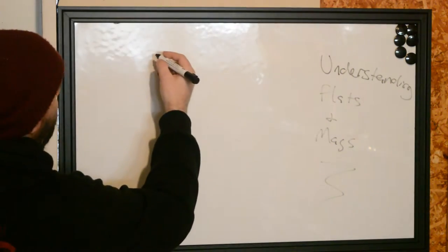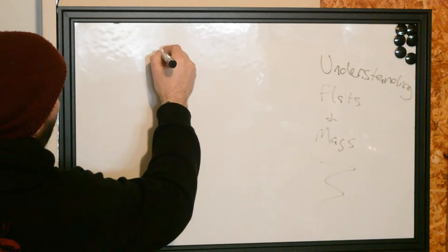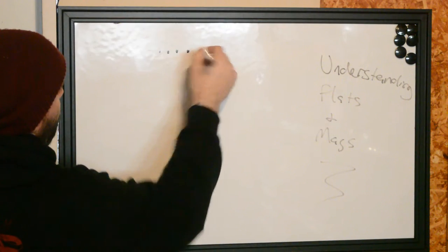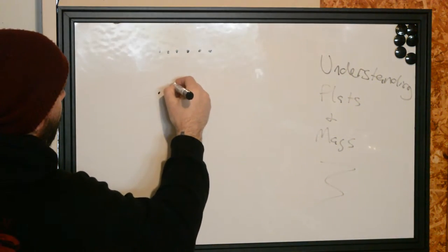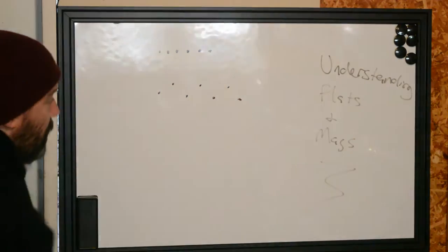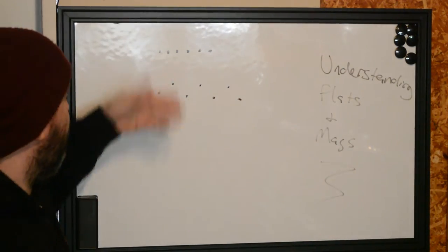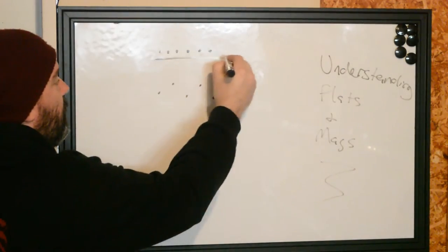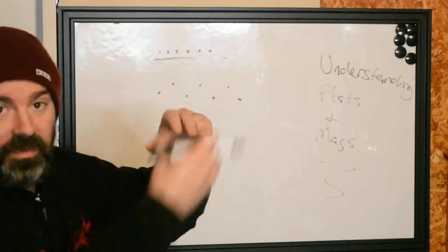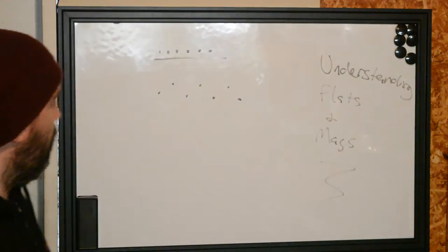When we get into flats and mags, what we're going to be doing is looking at configurations. If you were to look at them head-on, we're going to be looking at configurations usually like this. A flat is going to consist of a bunch of needles that are strung together, very close together, and it's going to result in just a flat plane of needles.